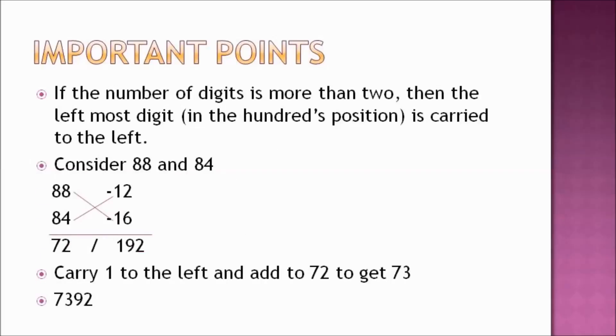If the number of digits is more than two, then the leftmost digit in the hundreds position is carried to the left. Consider 88 × 84. By subtracting from the base 100 we get -12 and -16. Multiplying 16 with 12 gives us 192. Here we keep 92 but carry 1 and add to 72 to get 73.